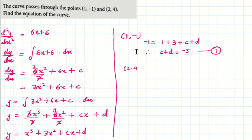For (2, 4), I'll put y = 4 and x = 2 in this equation. So 4 = 2³ + 3(2²) + 2c + d. That's 4 = 8 + 12 + 2c + d. Simplifying, 2c + d = -16. That's equation 2.